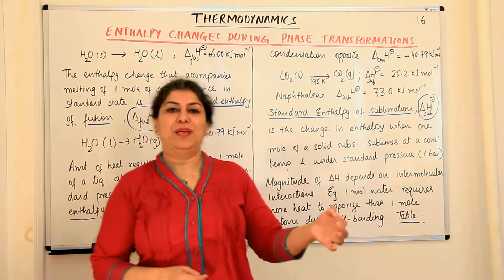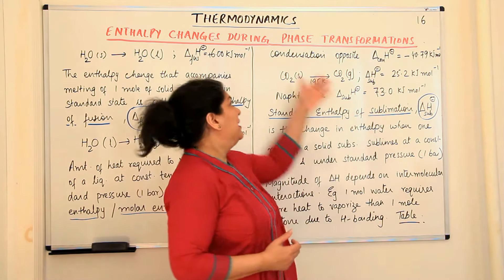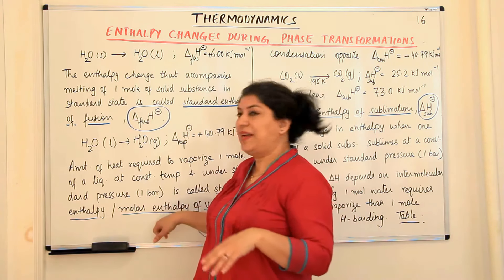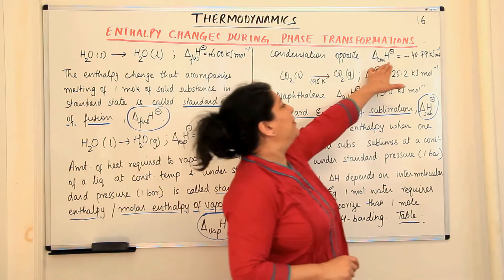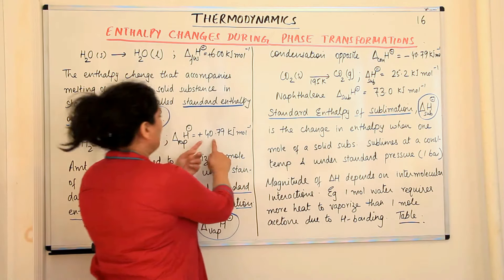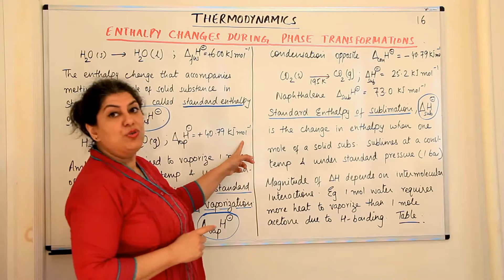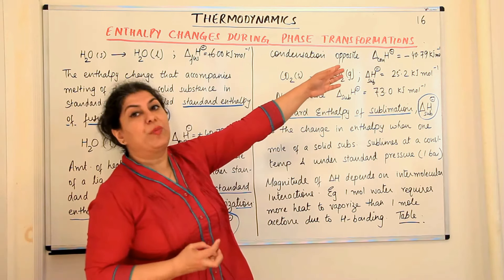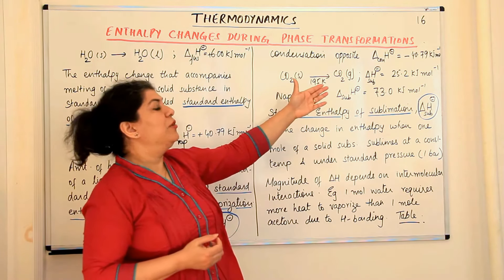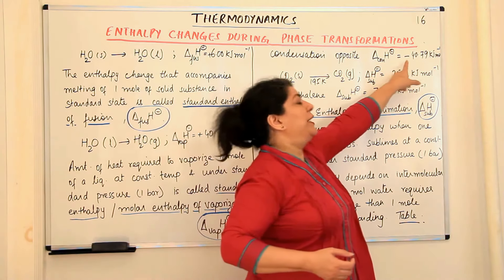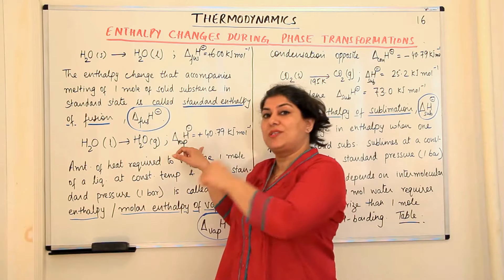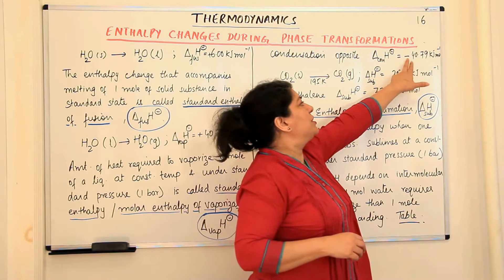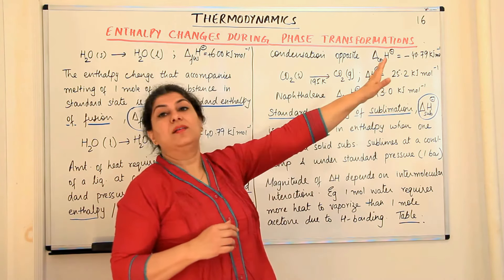The third process is sublimation, where a solid is converted into a gas directly. If the opposite process were to take place — that is, instead of vaporization, condensation occurs — then we would call it the enthalpy of condensation. The enthalpy of vaporization was +40.79 kJ/mol; for condensation, the opposite process for the same amount of water, it would release the same amount of energy — 40.79 kilojoules per mole — but the sign would change. In vaporization, heat is provided to the system; in condensation, the system is giving out heat, so it loses −40.79 kJ.